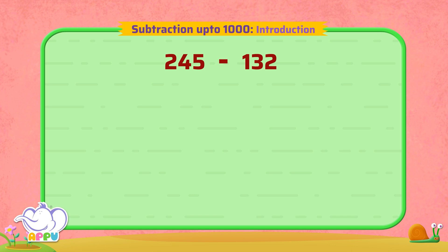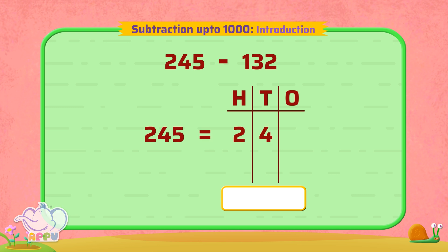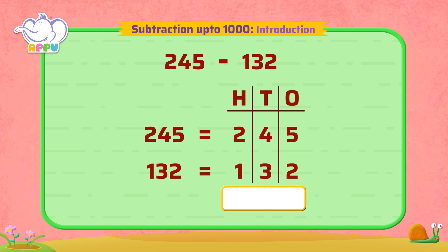245 minus 132. 245 has two hundreds, four tens, and five ones. 132 has one hundred, three tens, and two ones.